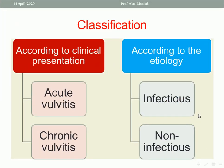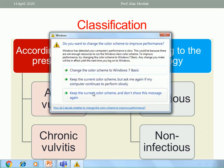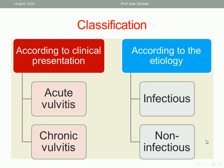What is the classification of vulvitis? It can be classified according to clinical presentation, either acute or chronic, or according to the etiology, either infectious or non-infectious. Non-infectious may be related to other factors like allergic vulvitis, drug eruption, or autoimmune disease.